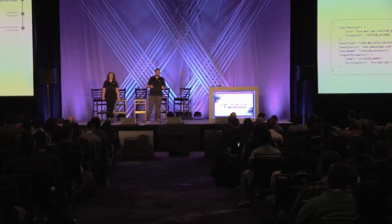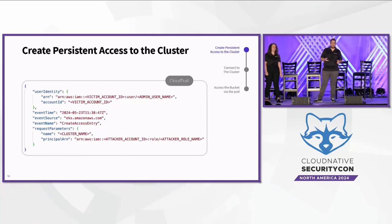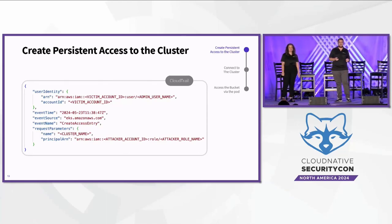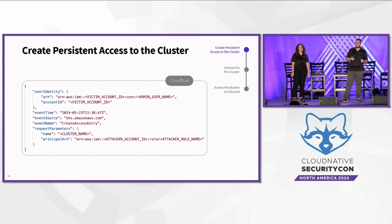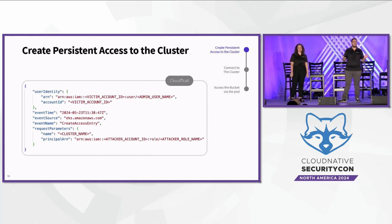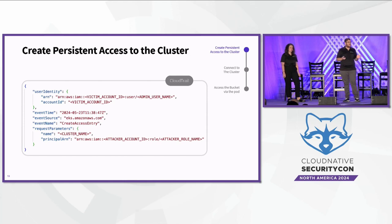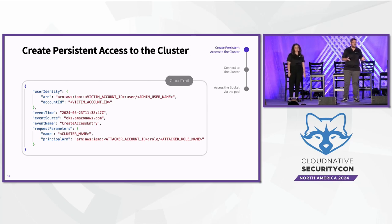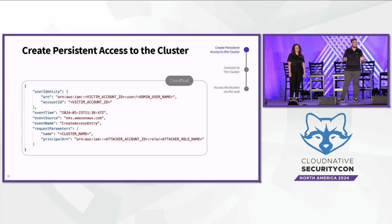It's easy to find this activity in CloudTrail. In CloudTrail, there is a CreateAccessEntry event name under the EKS event source. Under request parameters, you can see the cluster name and also the principal ARN — Amazon Resource Name — that we want to grant access to. The principal ARN contains an account ID. If this account ID doesn't appear in the list of your organization's account IDs and you aren't familiar with it, you have a really good reason to suspect there is a threat actor in your Kubernetes environment. Note that in this lecture, the log examples don't contain all fields, just the most important ones.